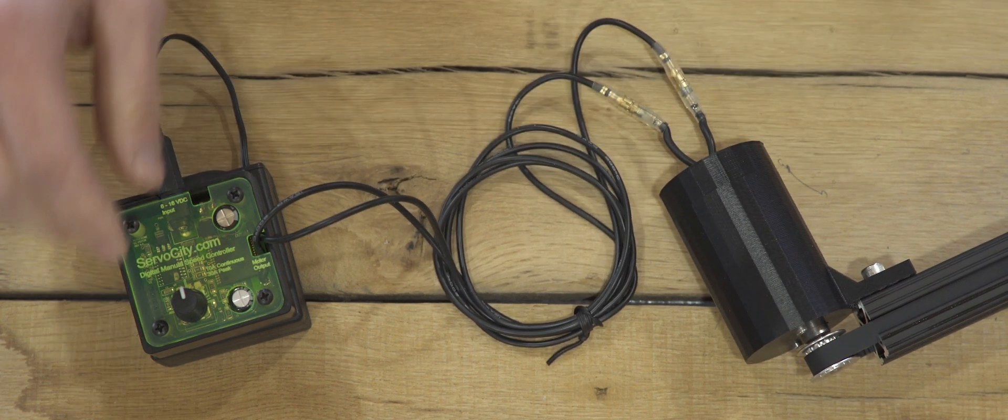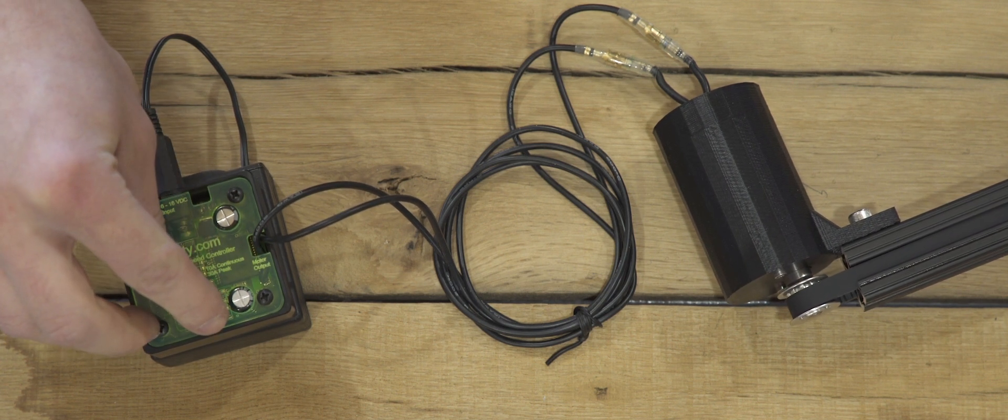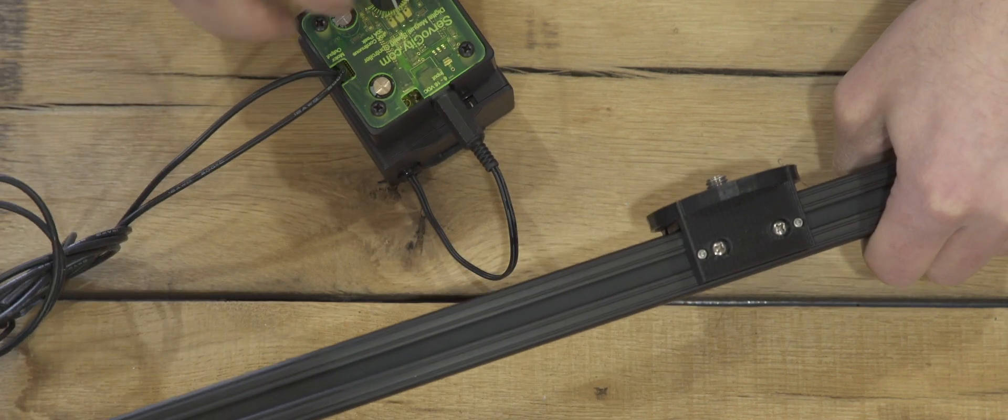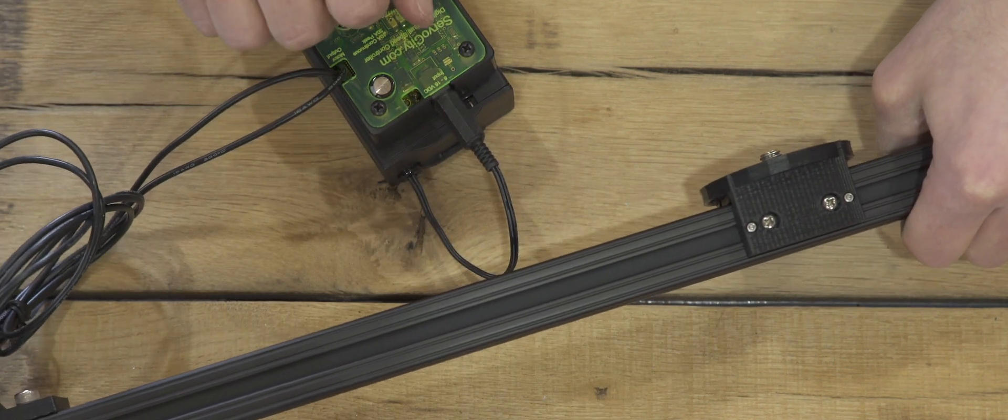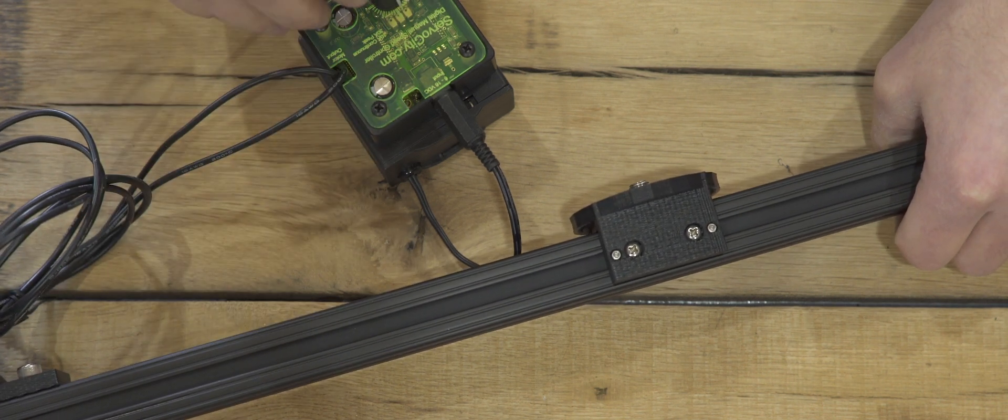The carriage is being moved by a motor so the motion is very smooth and very consistent. I really prefer using a motor for slider shots because I can concentrate much more on the action in the shot rather than desperately trying to stabilize the movement of my hands as I push the carriage along.